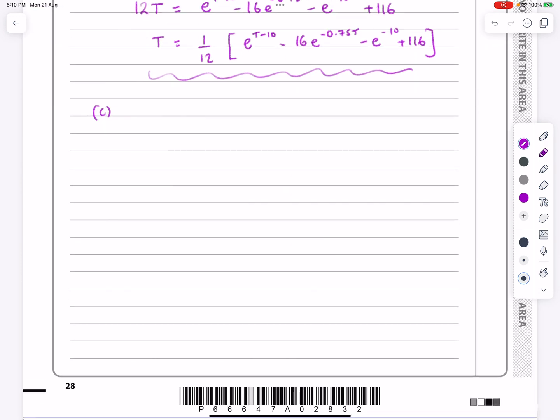There's the iterative formula. If T1 is 10, can you find T2 to four decimal places? It says that T_{n+1} equals a twelfth of... I always make mistakes when I'm actually copying things down. So once I've actually written this out, it's e^(Tn-10) - 16e^(-0.75Tn) minus E to the minus 10 there. The pause each time will be me just stopping and checking.